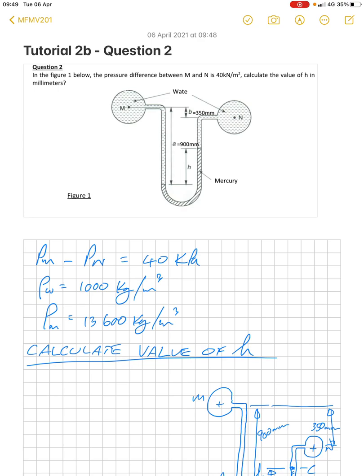So we know that the pressure at M minus N is equal to 40 kilopascals. We know the density of water is 1000 kg/m³ and the density of mercury is 13,600 kg/m³.